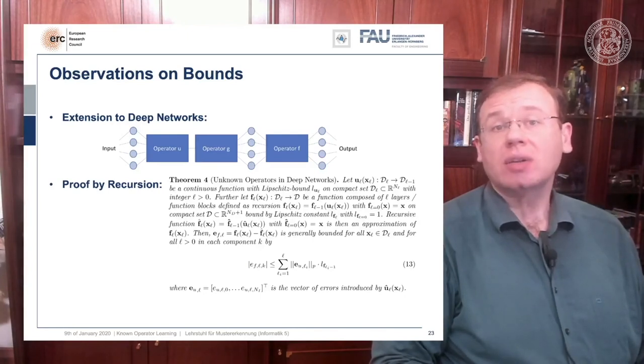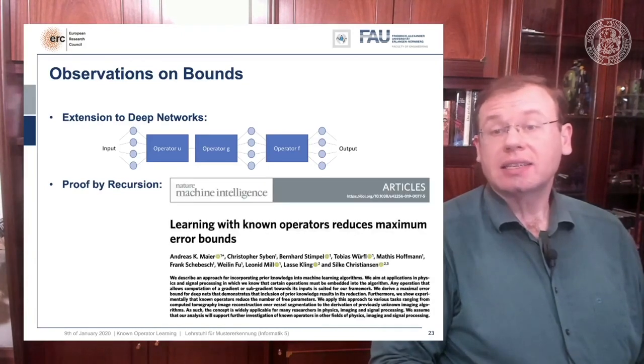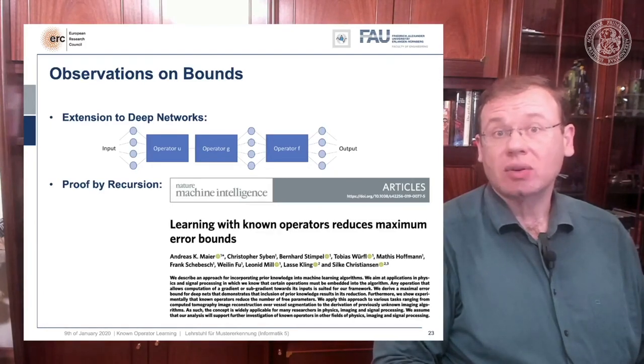Then you essentially get a sum over the layers to find this upper bound, and it still holds that it's the error that is introduced by the respective layer that contributes in an additive way to the total error bound. And again, if I know one layer, that part of the error is gone and the total upper bound is reduced.